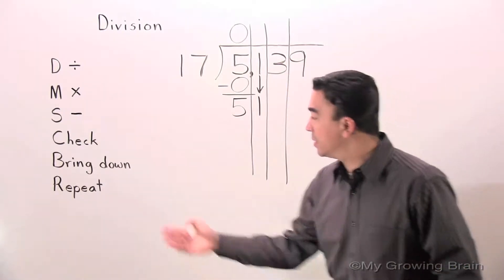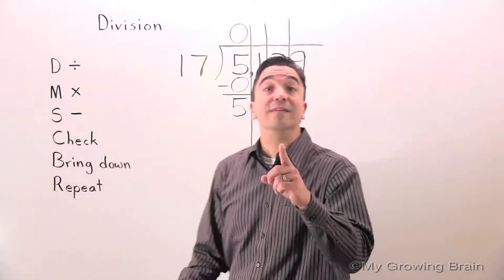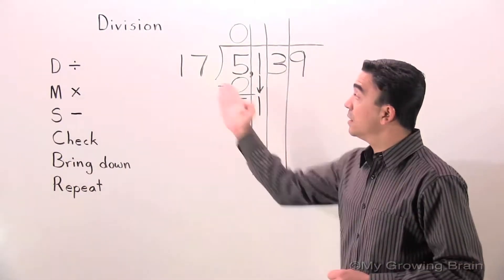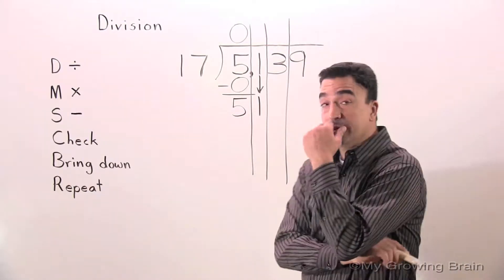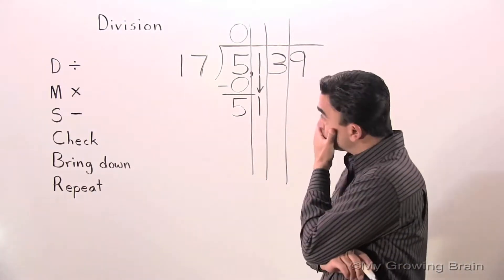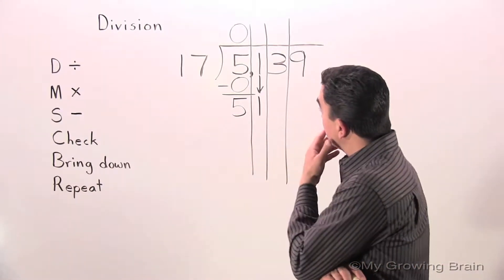Next step, repeat. When we say repeat, we mean repeat the process. Back to the top, divide. 51 divided by 17 or 17 into 51. Let's think about this. How many times can 17 go into 51?